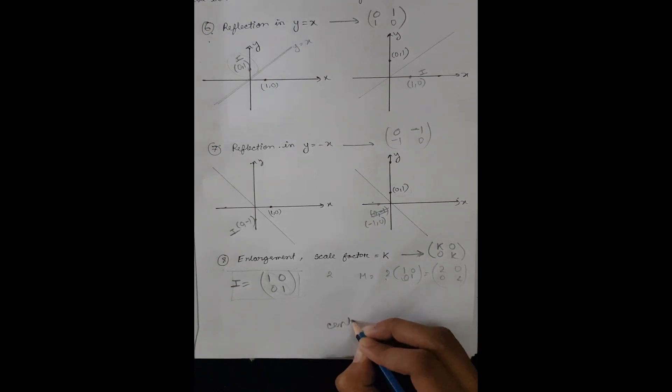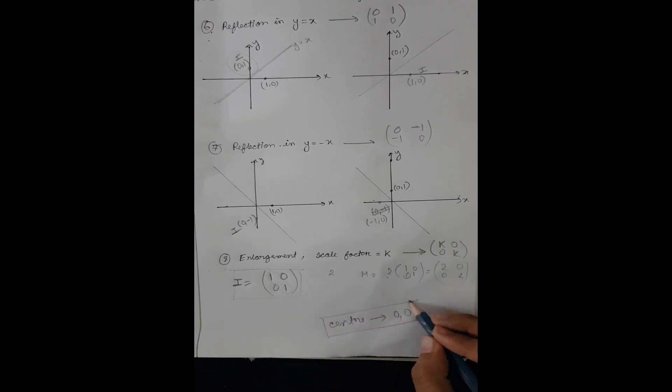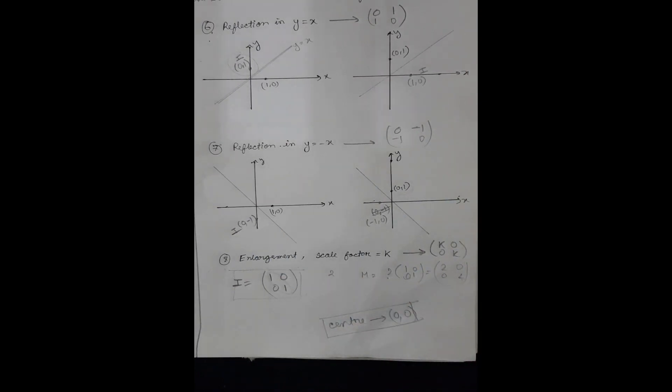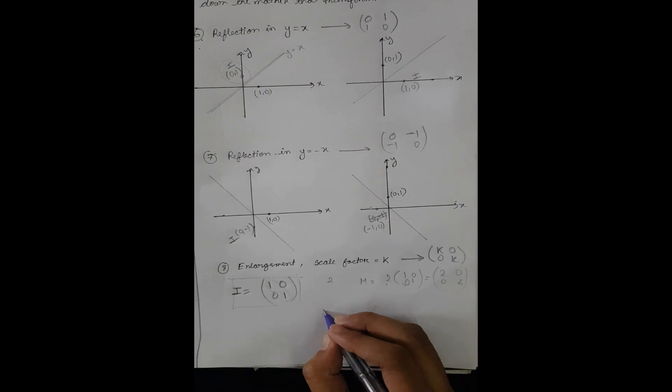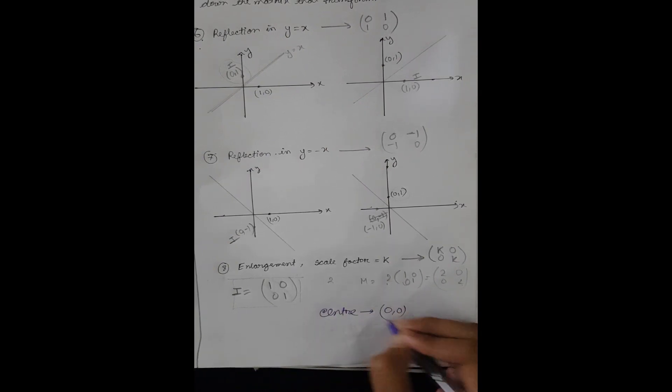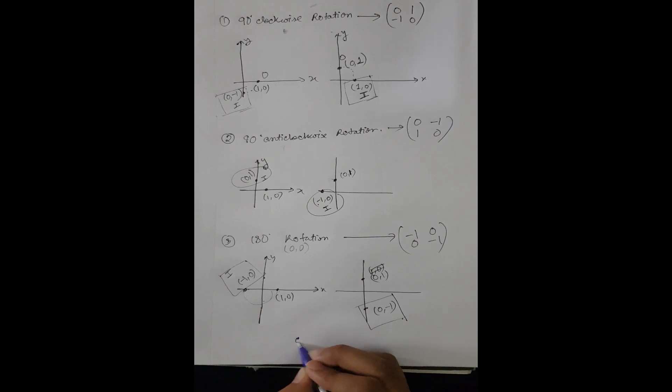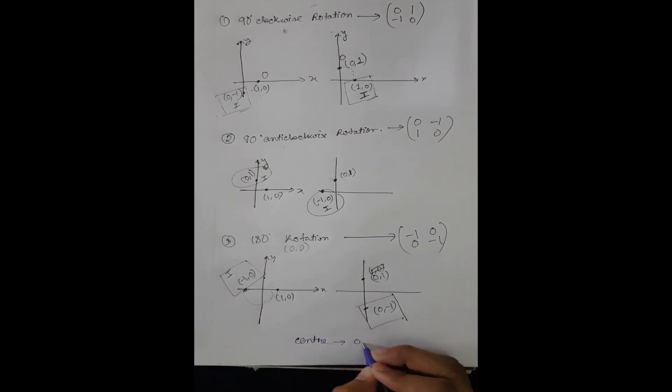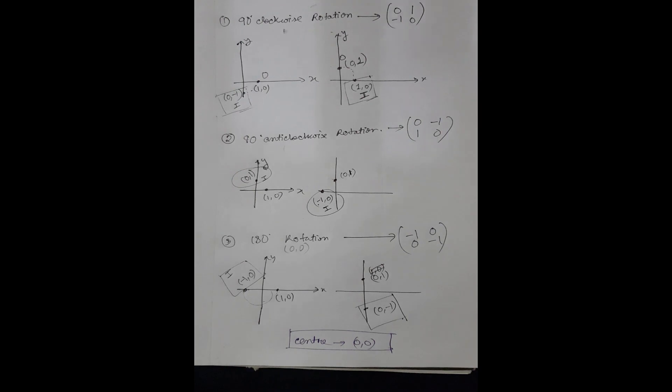These rules are applicable only if the center of enlargement and rotation is the origin (0, 0). For enlargement, this matrix applies only if the center is the origin. Similarly, for rotations, the center also has to be the origin. This is how you can find the matrix that transfers a triangle — you just need to identify which transformation has occurred and then find the corresponding matrix.